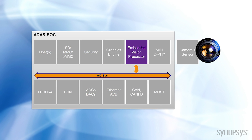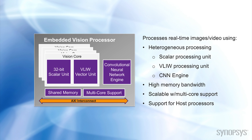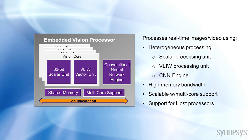Since an embedded vision processor is often part of a larger system, using a standard interface like an AXI bus is important for talking to external components such as external memory, a host processor, or other interfaces.